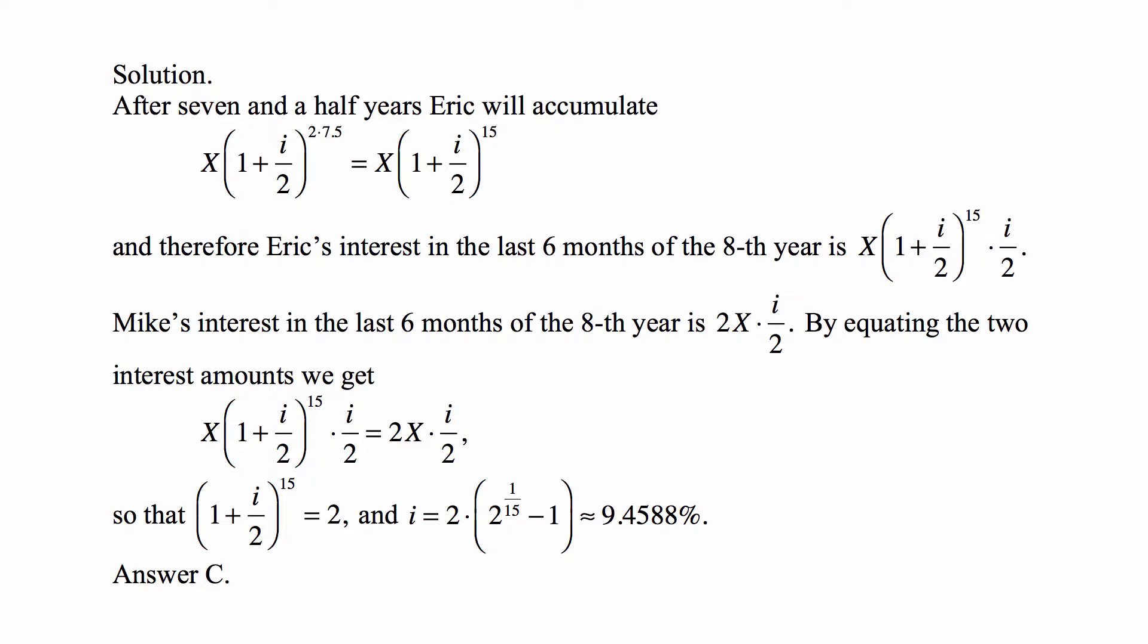Mike's interest in the last six months of the eighth year is 2X times I over 2, because that's what he gets every half a year, because he's getting simple interest. By equating the two interest amounts, we get X times (1 plus I over 2) to the fifteenth times I over 2 equals 2X times I over 2.